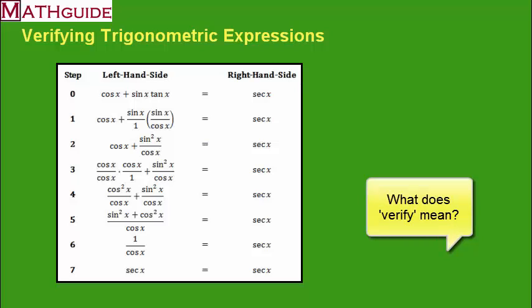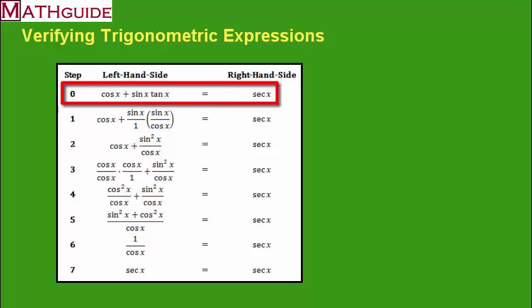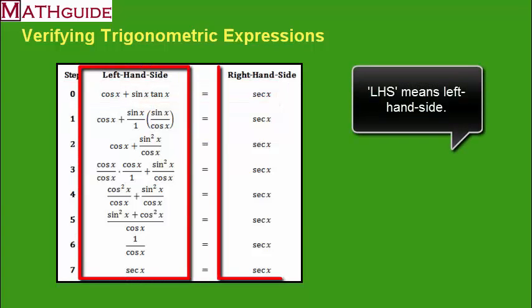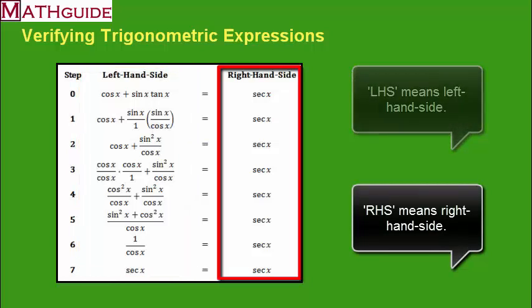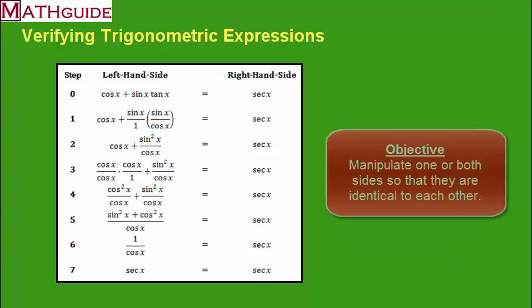Let's first talk about what it means to verify an identity. Here you'll see I have an example from MathGuide.com. I have the initial statement — step zero — with two different sides: the left-hand side, or LHS, and the right-hand side, or RHS. The job is to get those two sides exactly equal to each other. Using substitutions and clever formulas, if I can simplify one side to look like the other using algebra, then the initial statement is correct and it's called an identity.